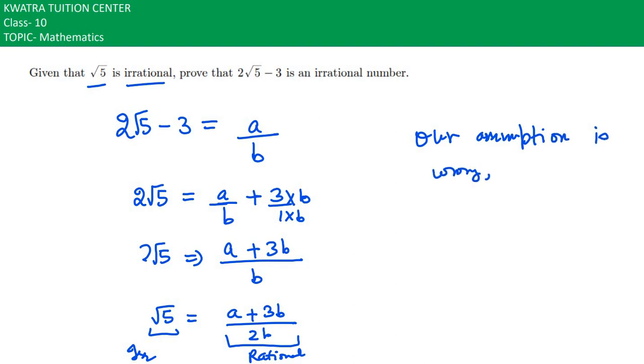Therefore, we can say that 2√5 - 3 is an irrational number because it is not equivalent to a rational number. So that's how you have to solve this one.